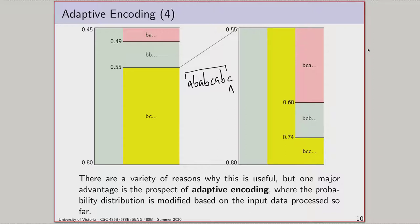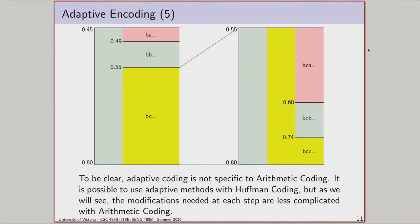We could also encode some data before our encoded stream — similar to how we encode a Huffman tree, we could encode a probability table. Adaptive coding — modifying the probability of each symbol at each step — is not specifically an arithmetic coding thing. It's just that arithmetic coding makes it really easy, because all you need is the probability table. With Huffman coding, you'd have to modify or regenerate the Huffman tree, which is harder. There are techniques for adaptive Huffman coding, but it's not as obvious as with arithmetic coding where you just modify the cumulative probability distribution.